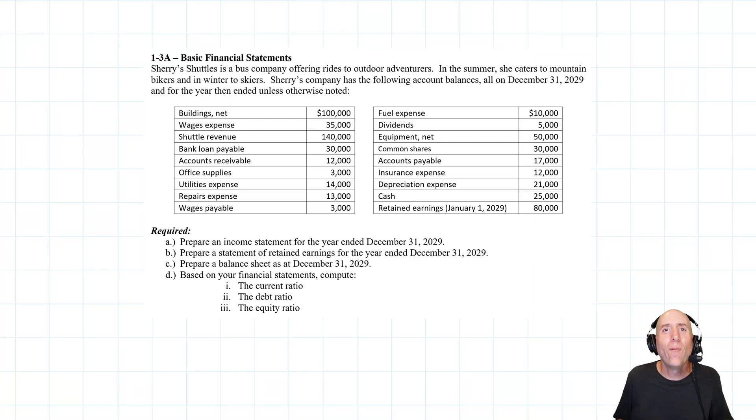Let's take a look at problem one three a. We are finally here, our first full set of financial statements. This problem asks us to prepare an income statement, which we're going to do in this video. In the next part of the video, we'll do a statement of retained earnings and then a balance sheet. So three new financial statements to be explored.